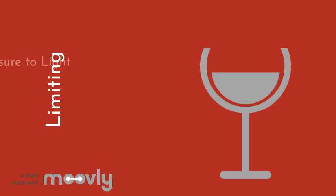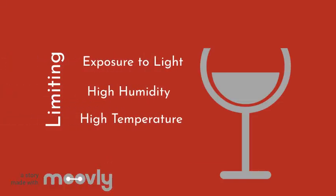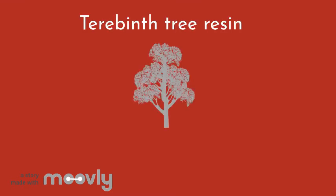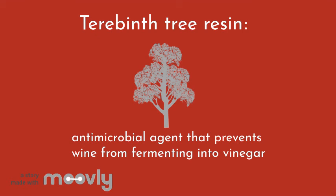Other than limiting exposure to light, high humidity, and high temperature, there are other ways to preserve wine. Terebinth tree resin is one of the earliest wine preservation additives. It was described by the Romans as a wine preservation technique and used throughout the Middle East. This is an antimicrobial agent that prevents wine from fermenting into vinegar.